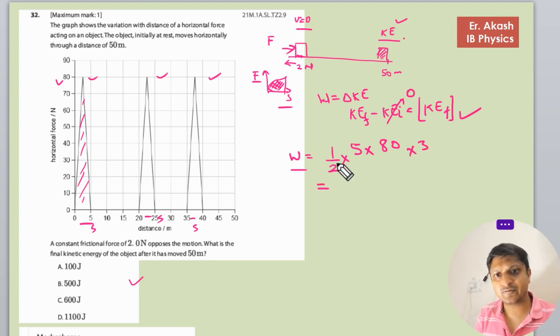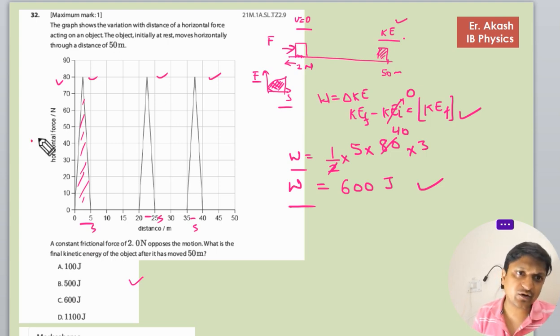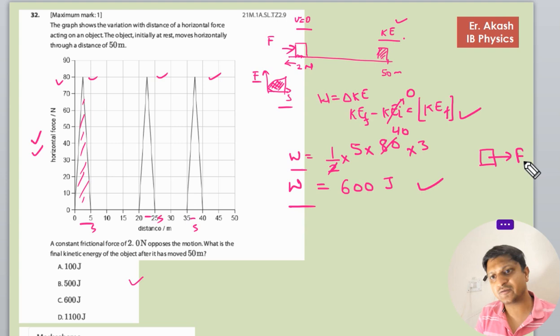So what will it be? This is 40, this is 200, 200, and 300... 600. So 600 joules is the work. Now this is the work by the horizontal force on this object. There is a force that is horizontal force.